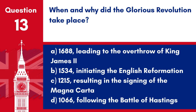Question 13. When and why did the Glorious Revolution take place? A. 1688, leading to the overthrow of King James II. B. 1534, initiating the English Reformation. C. 1215, resulting in the signing of the Magna Carta. D. 1066, following the Battle of Hastings. Answer: A. 1688, leading to the overthrow of King James II. The Glorious Revolution took place in 1688, resulting in the overthrow of King James II and the establishment of constitutional monarchy.